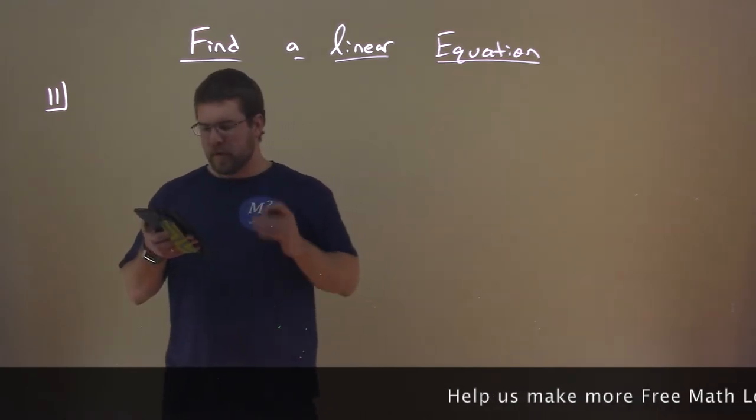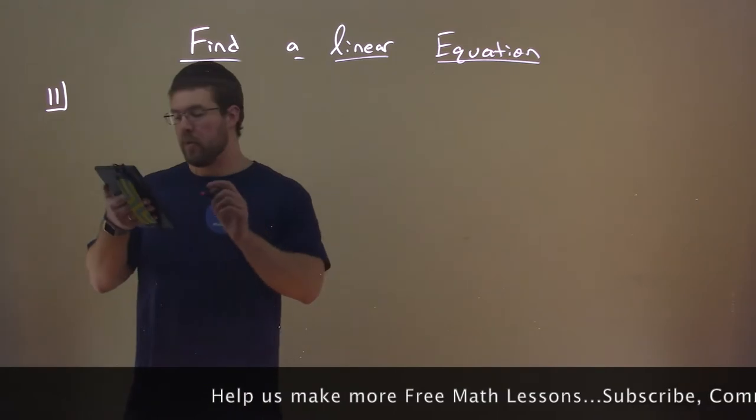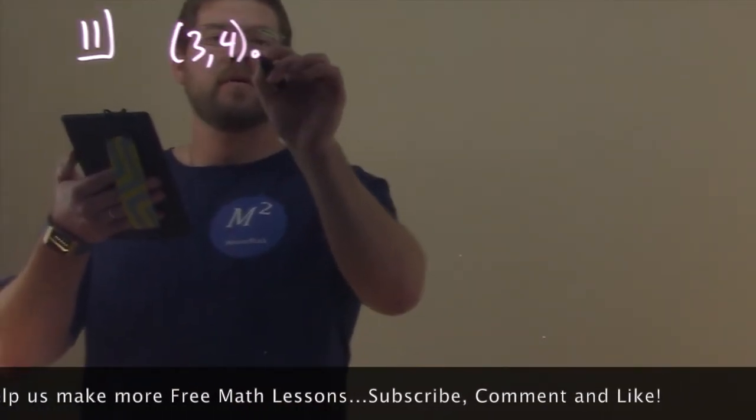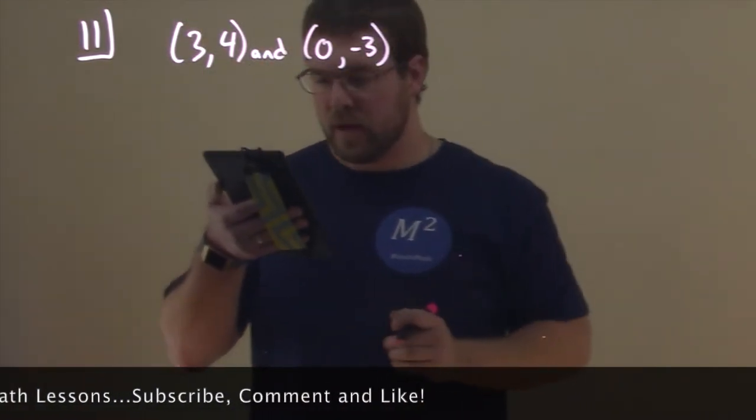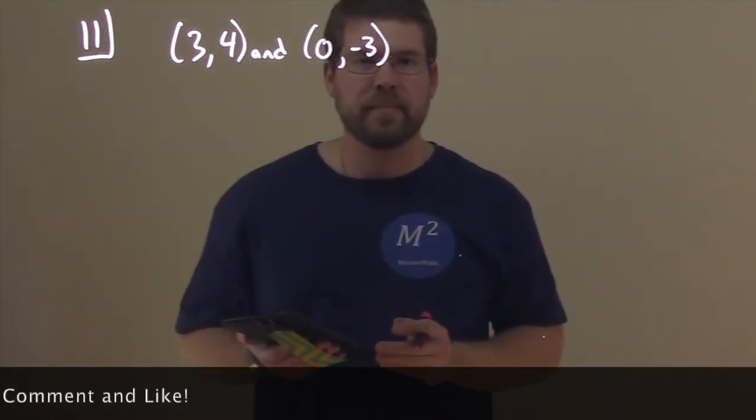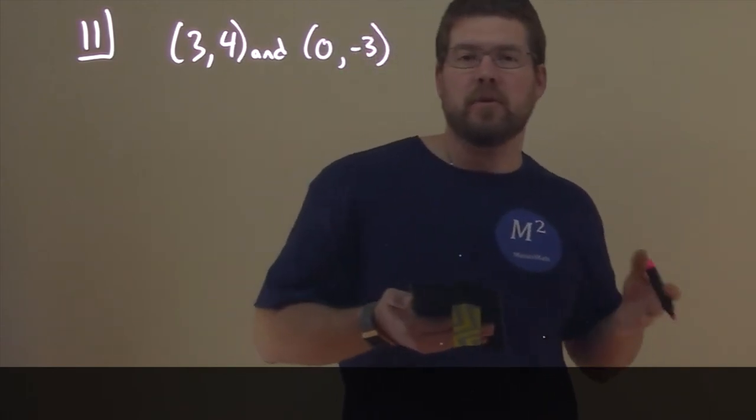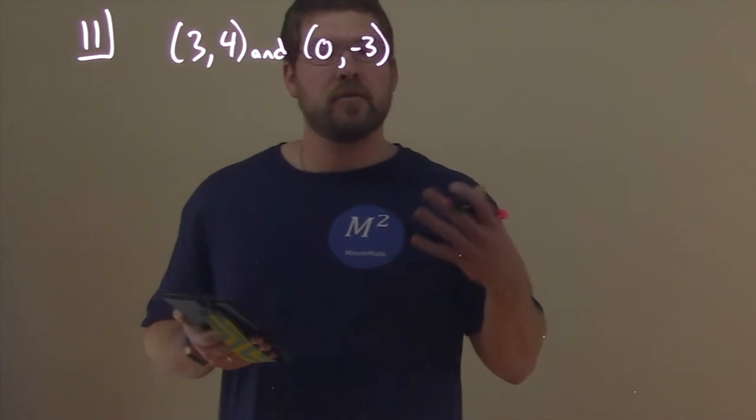So number 11 here. They're telling us here that we want to find the equation of the line passing through the points (3, 4) and (0, -3), and we want to write the final equation in slope-intercept form. Well, a few things. We have to combine everything that we've learned already. We have points, we can find the slope. So let's do that first.